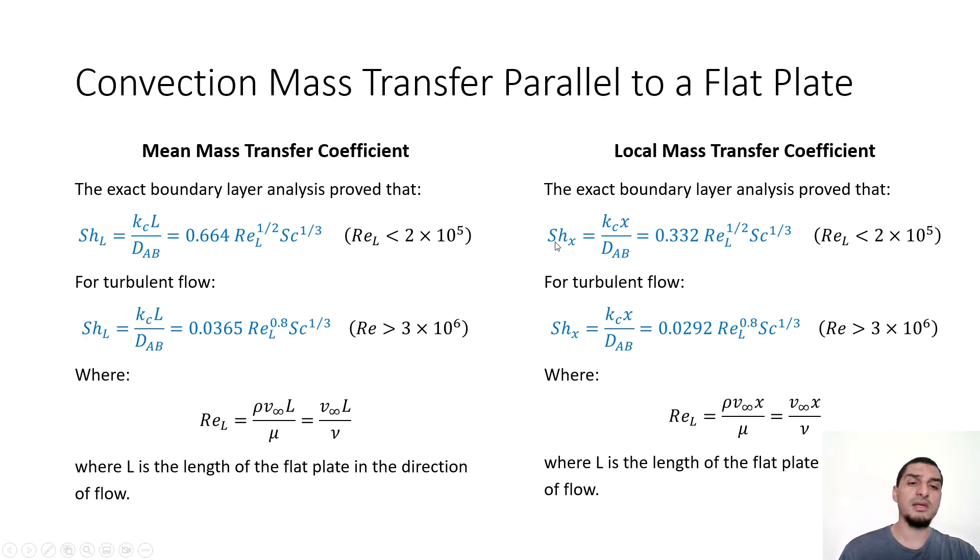We have also the local mass transfer coefficient. So this is the mean or the average mass transfer coefficient for the whole length. If you want to get the mass transfer coefficient for a specific point at distance x from the starting point or from the leading edge, you can use this equation.